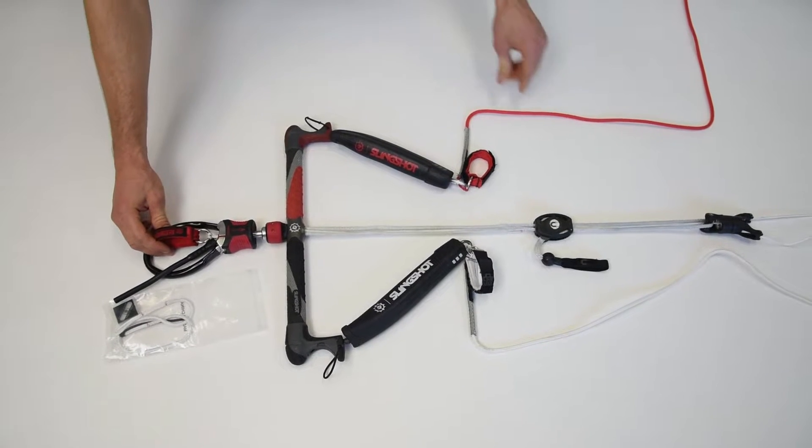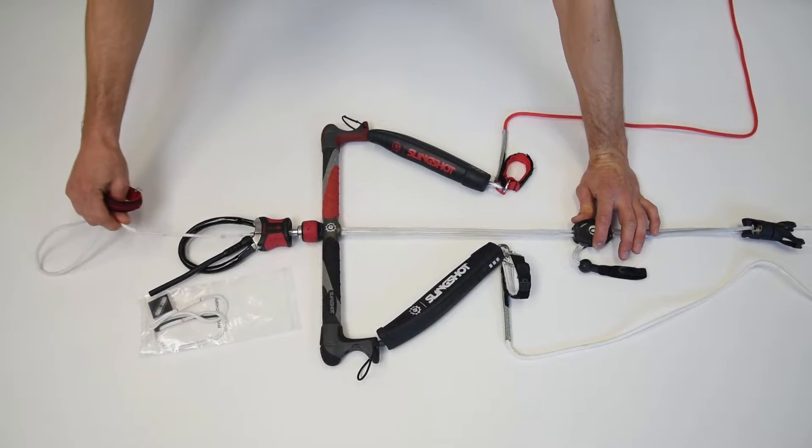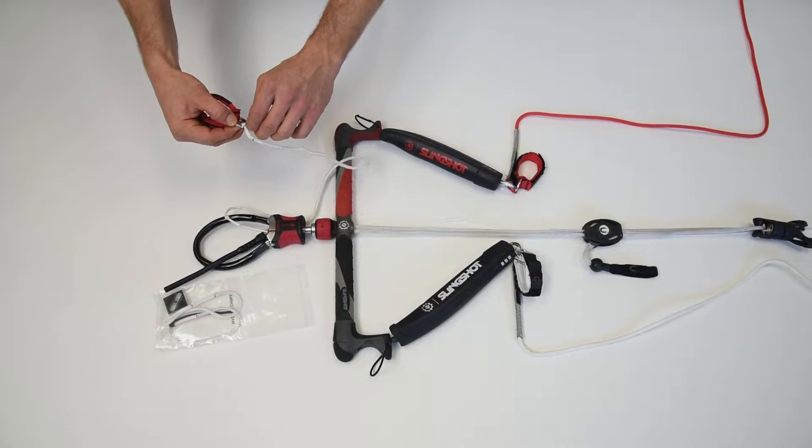Welcome to Slingshot Tech. In this video we are going to show how to replace the CSS bungee on a slingshot bar. Here we are using the sentinel bar but you can follow the same process if you have the below the bar guardian system.